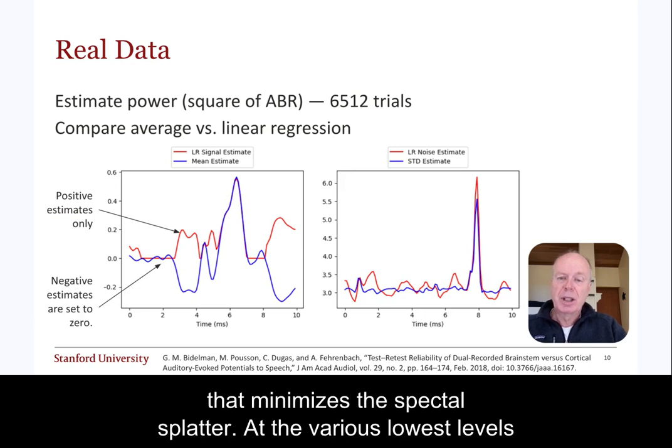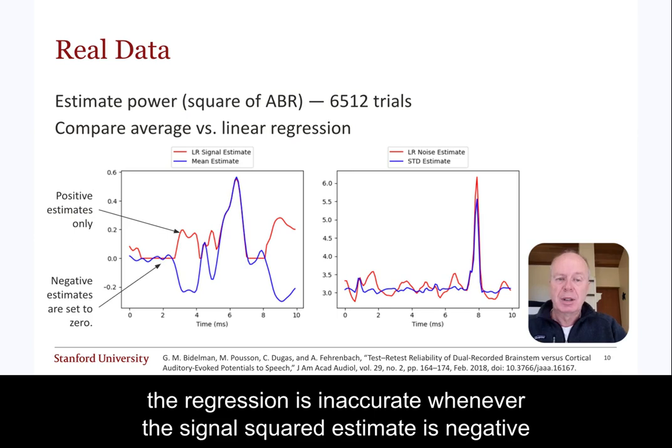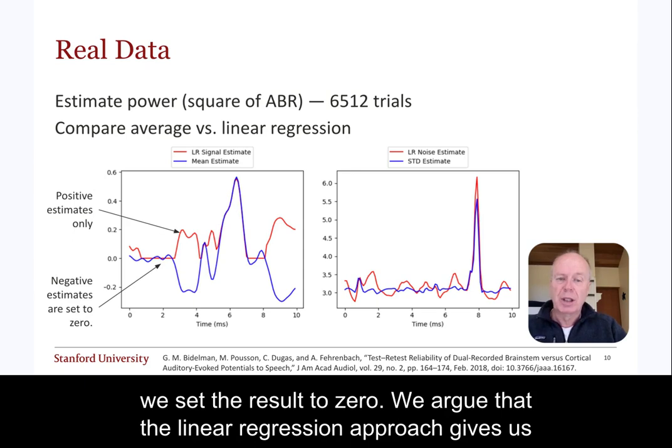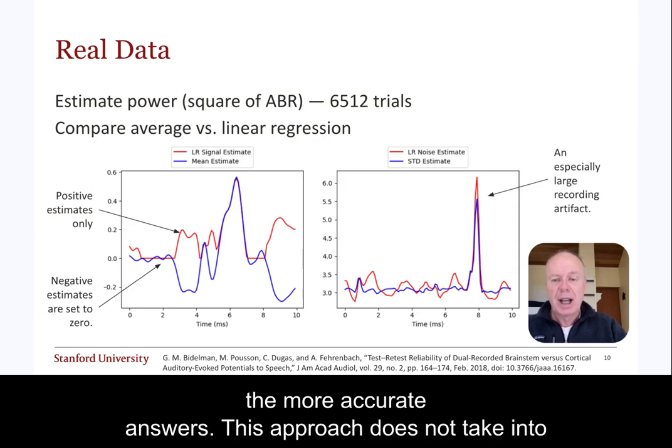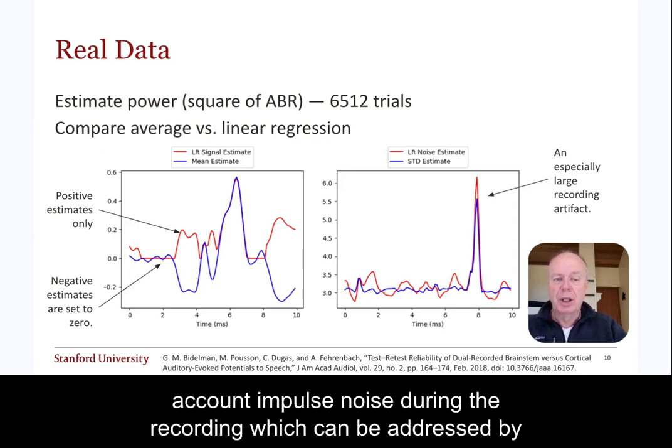At the various lowest levels, the regression is inaccurate, and whenever the signal squared estimate is negative, we set the result to zero. We agree that the linear regression approach gives us the more accurate answers. This approach does not take into account in-post-noise during the recording, which can be addressed by pre-processing steps.